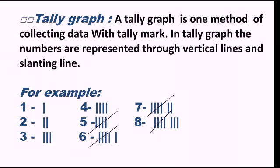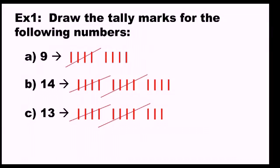When we count the marks, it is easier for us to count the numbers, because every five has one slanting line and then we start again for new numbers. Now let us read the first example: draw the tally marks of the following numbers. For nine: first make four vertical lines and one slanting line (that is five), then four more vertical lines — five plus four equals nine. For fourteen: five plus five plus four. For thirteen: five plus five plus three. In this way we can give the tally marks and represent numbers.